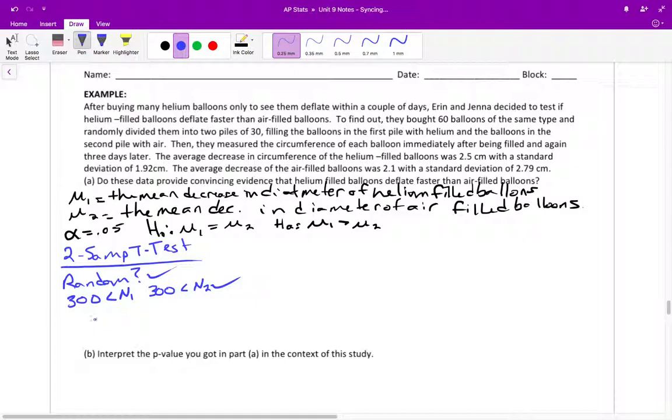And then the last one, they divide them into two piles of 30. And this is where you have to be very careful. You're asking yourself, is 30 greater than or equal to 30? And is 30 greater than or equal to 30? And in which case, both of them are. It was just barely enough. They had just enough balloons to be able to get by with that large counts condition.